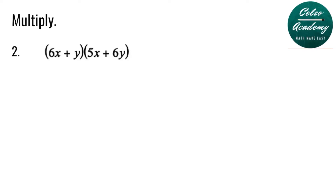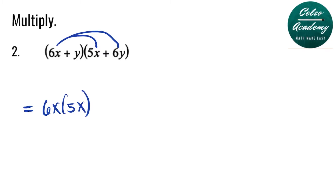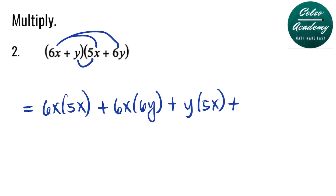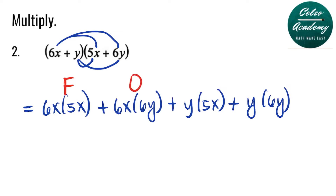Question number two: multiply 6x plus y and 5x plus 6y. Step one: multiply 6x and 5x. Next, multiply 6x and 6y. Now distributing the y: y times 5x, and then y times 6y. Step one: first terms 6x and 5x. Step two: outside terms 6x and 6y. Step three: inside terms y and 5x. Step four: last terms y and 6y.